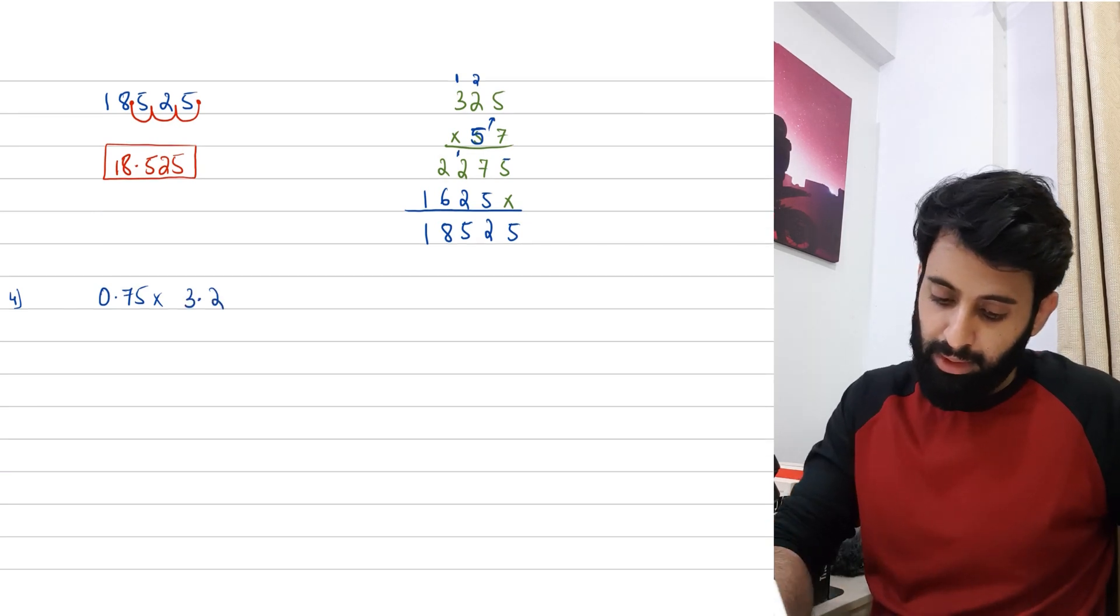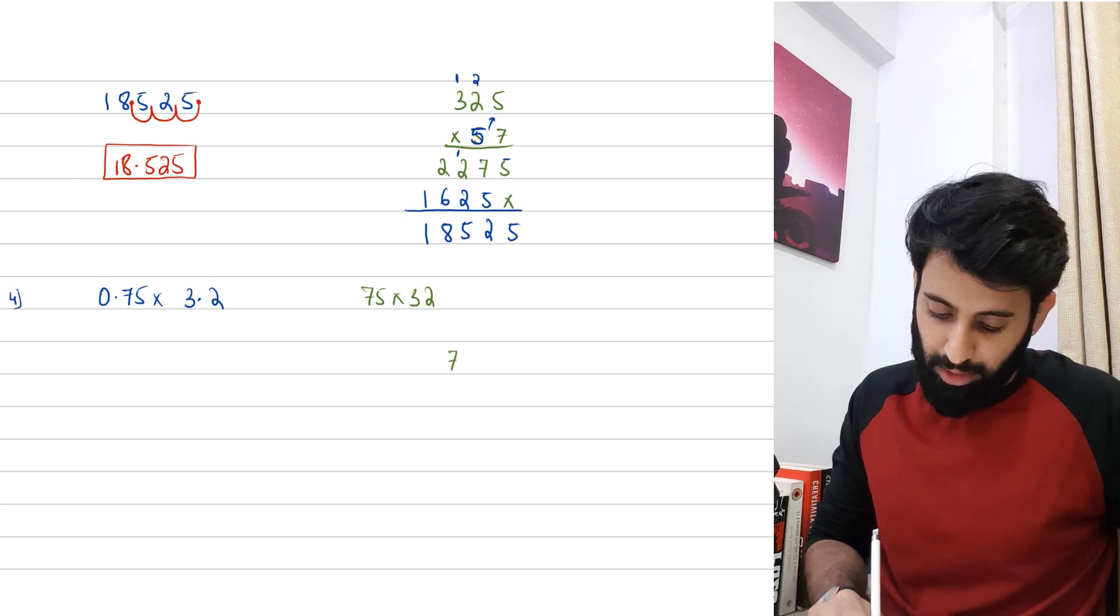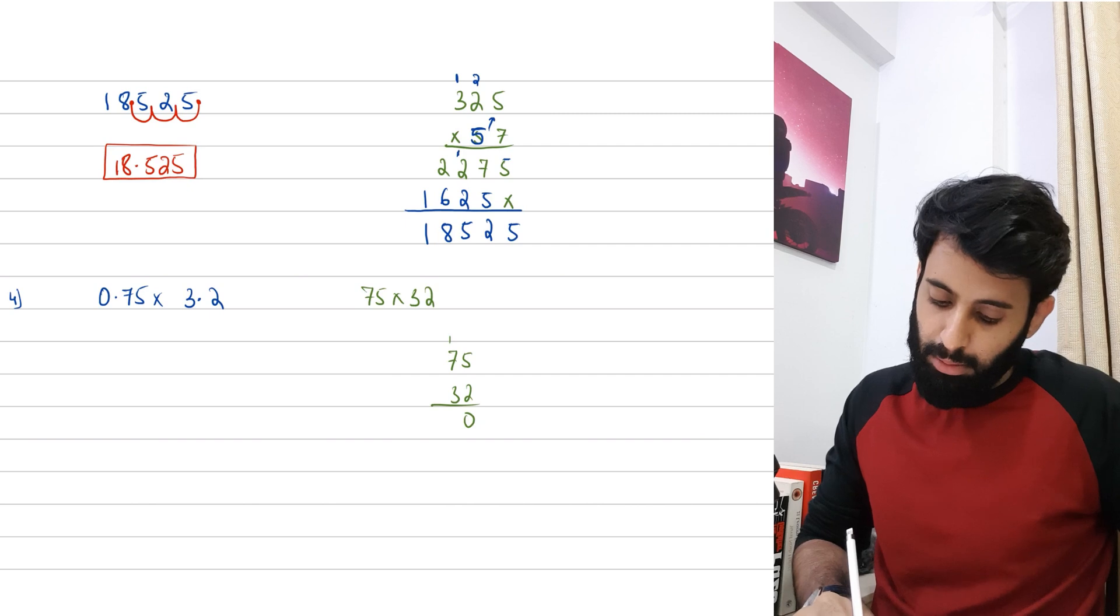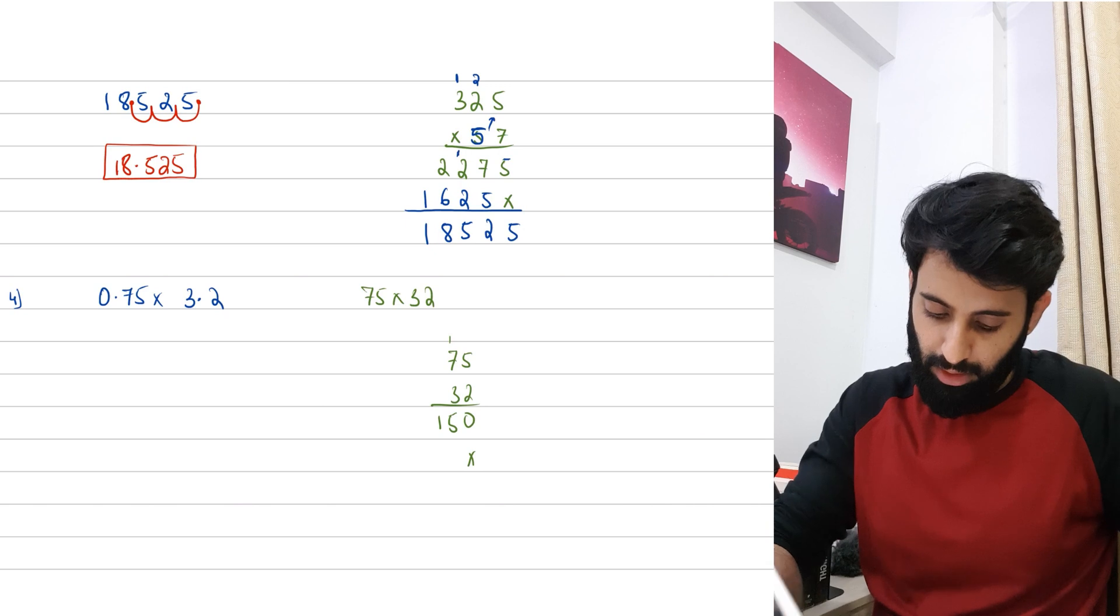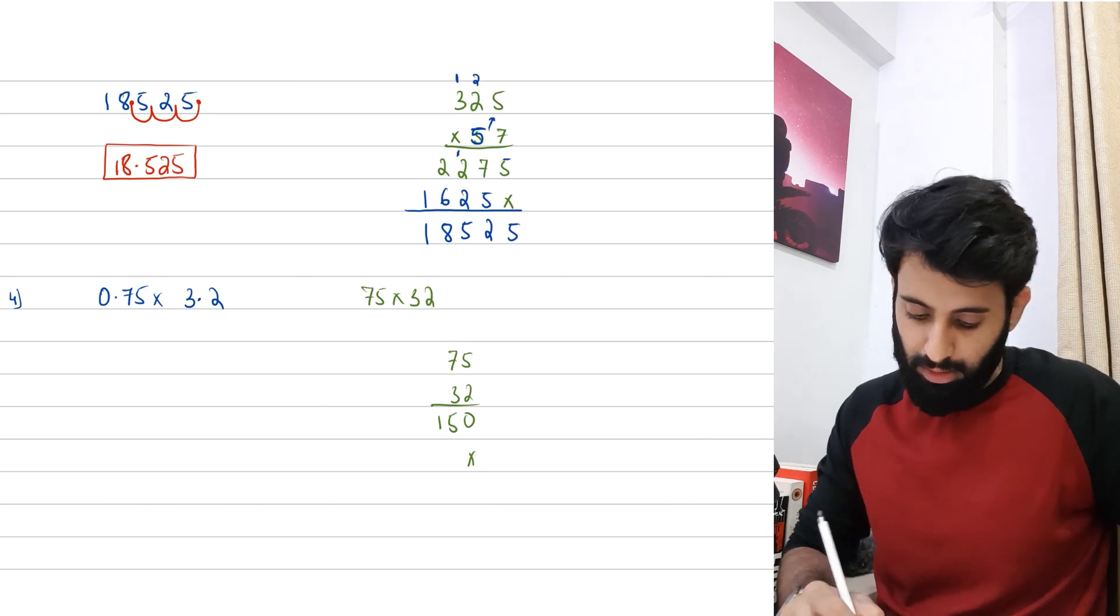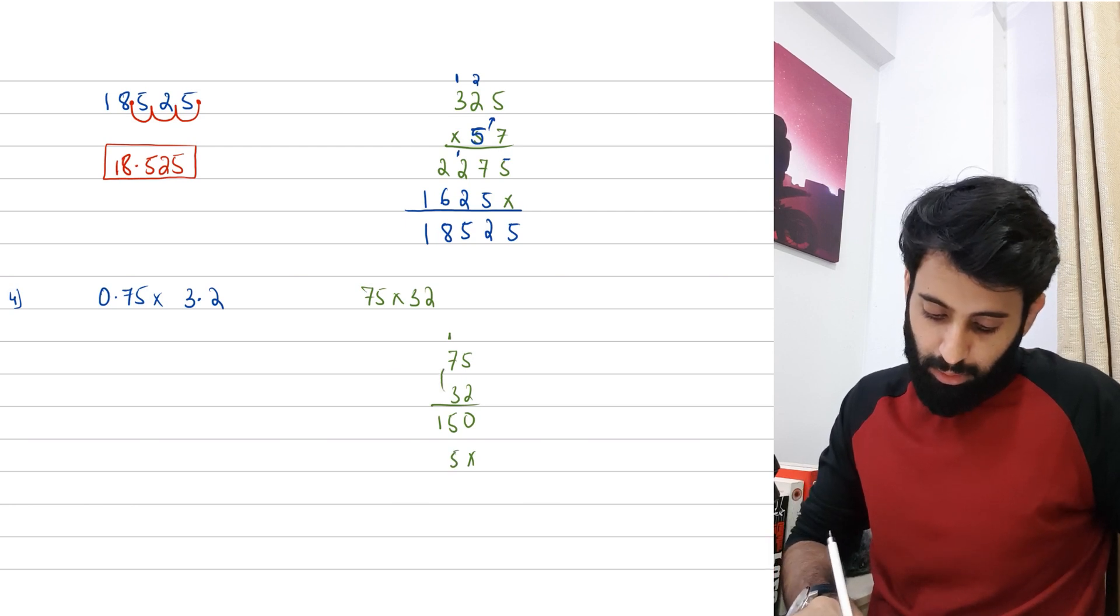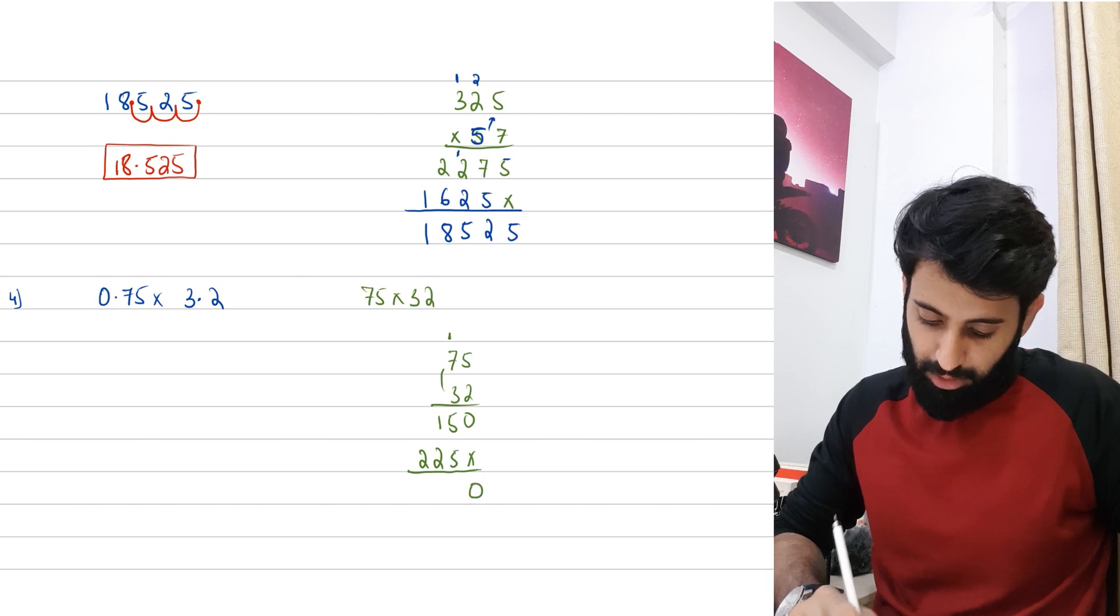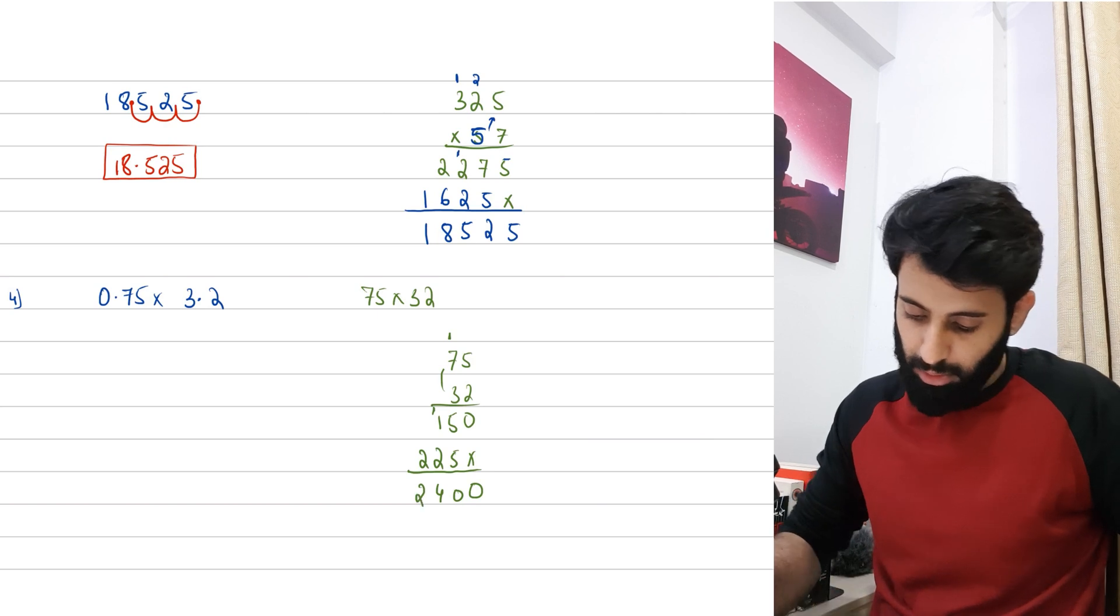Let's say you've got to do 0.75 multiplied by 3.2. What I will do is ignore the decimal, so I'm just going to look at it as 75 times 32. We're going to multiply 75 and 32 the regular way. So 2 times 5 is 10, 2 times 7 is 14, 14 plus 1 is 15. Put a cross here, I'm going to remove the numbers that I carried previously. 3 times 5 is 15, 3 times 7 is 21, and then 21 plus 1 is 22.